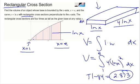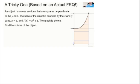One last problem to wrap up topic 8.7. This is based on an actual free response question. An object has cross sections that are squares perpendicular to the y-axis. The base of the object is bounded by the x and y-axis, x equals 1, which is right here, and the function x cubed plus 1, which is there. Find the volume of the object.